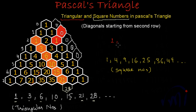We get our first square number by adding the first element of the diagonal starting from row number 2 with the 0 outside — giving 1. To find the second element, we add 1 and 3 from the diagonal: 1 plus 3 is 4, which is the second square number. Adding 3 and 6 gives 9, which is the third square number.